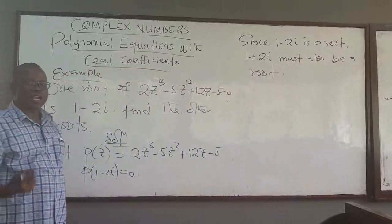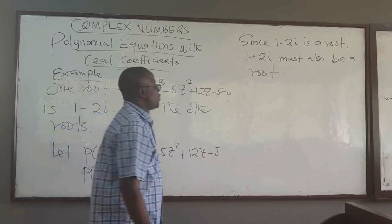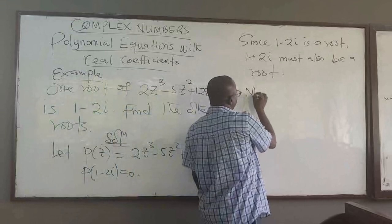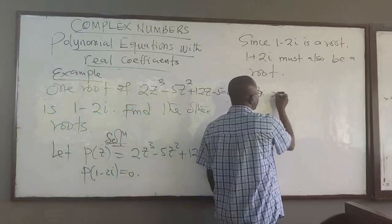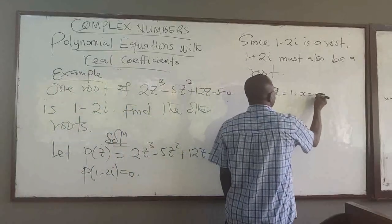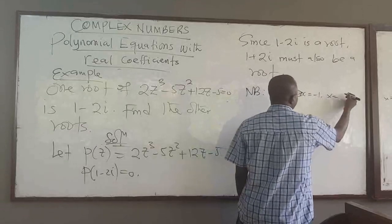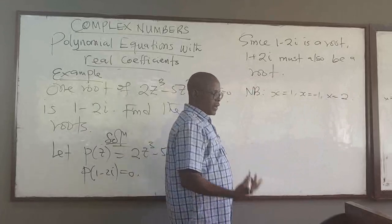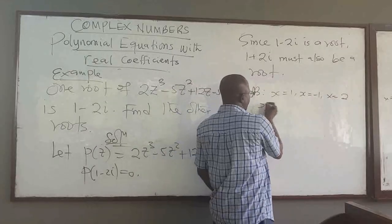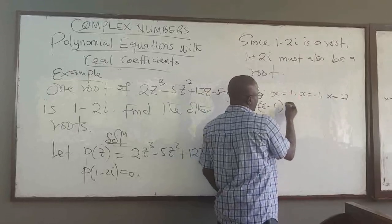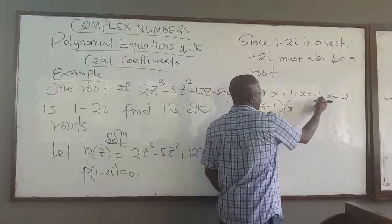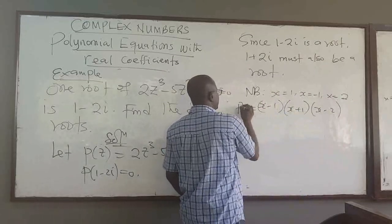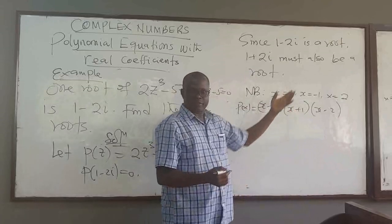So we are left to find the one other root. How do we get that? Now, remember that if I have, for real numbers, x equals 1, x equals negative 1, and x equals 2, if these are three roots of the cubic polynomial, then we know that x minus 1 here is a factor. If I multiply by x plus 1, here is another factor, x minus 2, so this is my polynomial for real numbers.